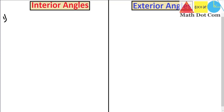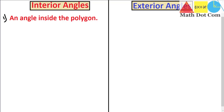The first difference between the interior and exterior angle is their definition. As the name indicates, interior means inside. So an interior angle is defined as an angle inside the polygon. A polygon is a closed plane two-dimensional shape — poly means many and gon means angle — so a shape that has many angles. An angle inside that closed figure is called the interior angle.